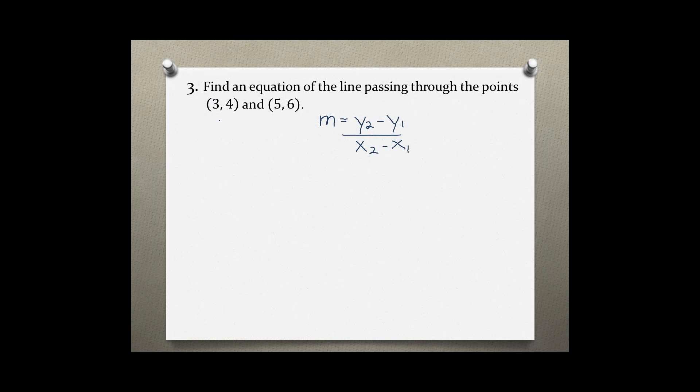Next step would be to label your points so you don't get confused. Let me call this first point (x₁, y₁) and the second point (x₂, y₂). Now plug these values into your slope formula.